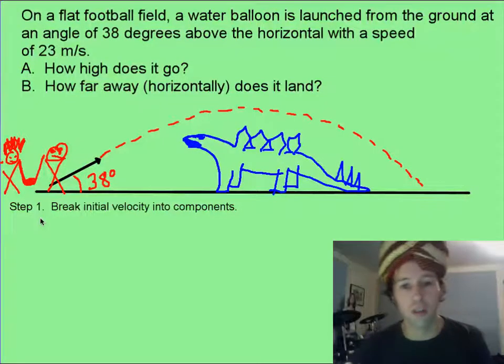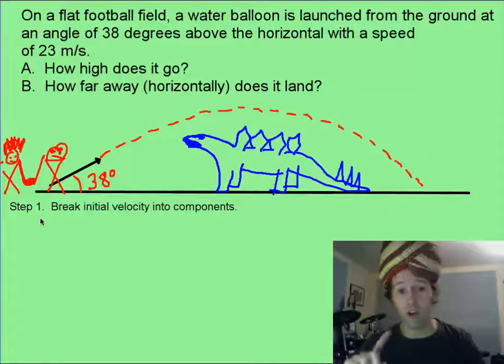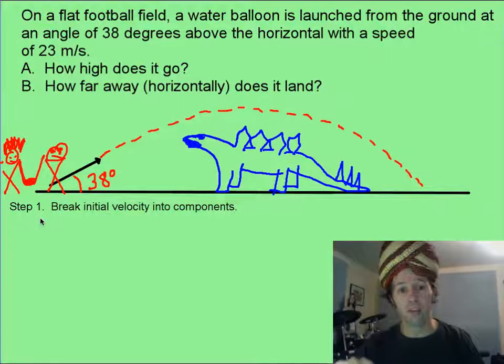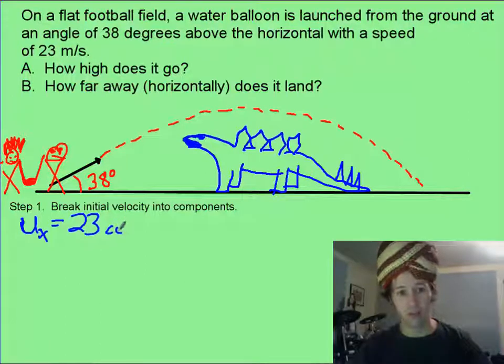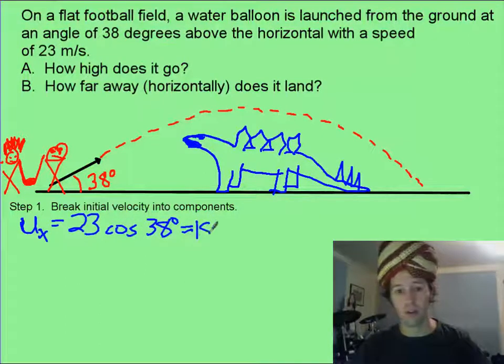Hopefully your picture is one-third as awesome as mine is, and hopefully you also know that step one is you need to break that initial velocity into components, because we can't do very much with this funny angle. So the initial velocity in the x-direction is going to be 23 times cosine of 38, and that's going to be about 18.1 meters per second.